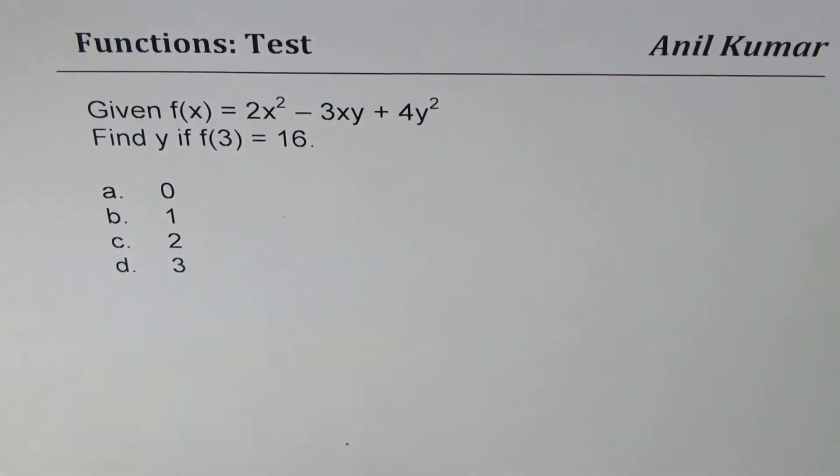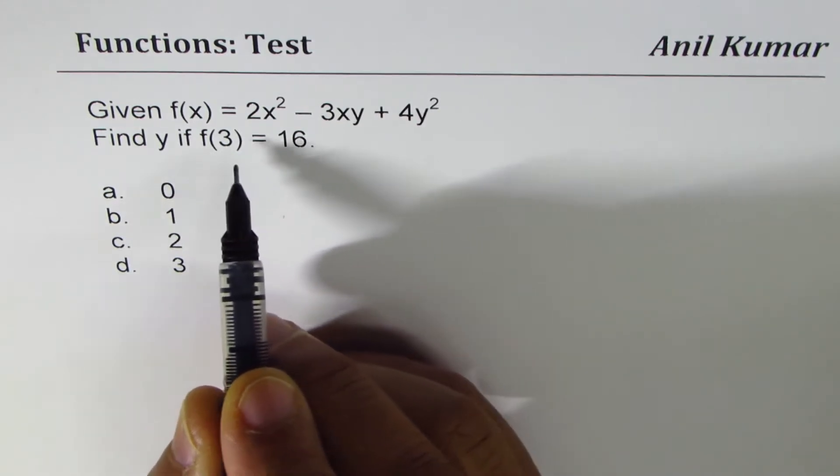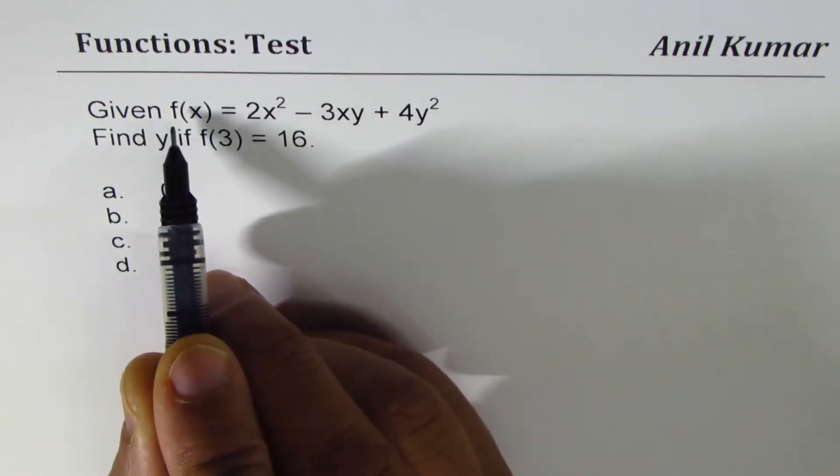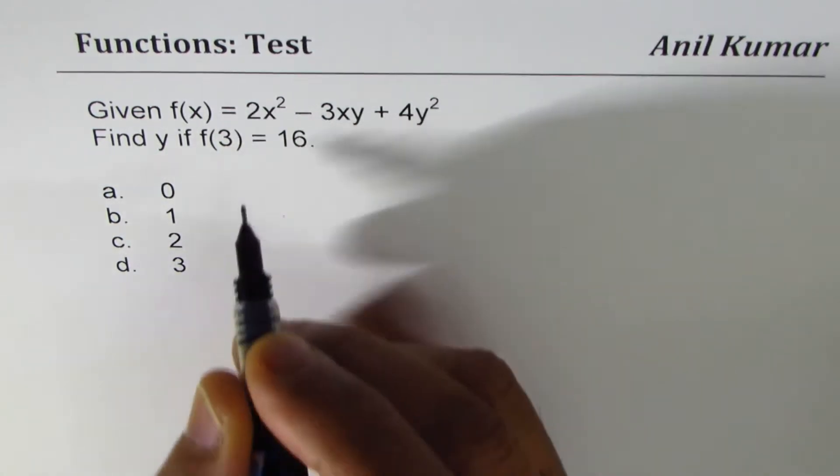Four choices are given to you. f(3) = 16 means if I replace x with 3, then f(3), the value of the function at x = 3, is 16.